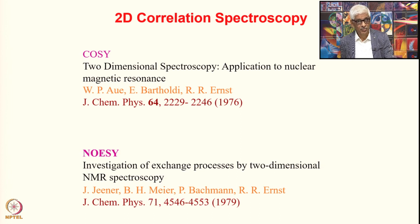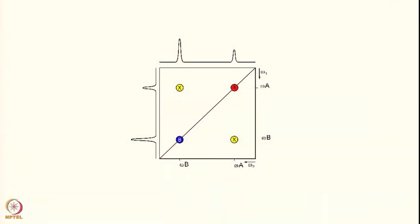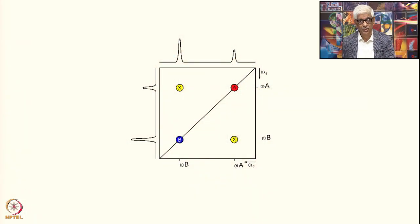We prepared the ground to understand these experiments in the previous class, because all of these involve very crucial magnetization transfers, and that is the information carrier in these experiments. So what does this experiment look like? What is the correlation experiment? Schematically, this is an experiment indicated like this. We have two dimensions represented as omega 1 and omega 2, or we could use F1 and F2.